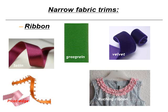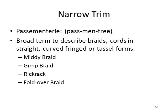Passimentary is a French word — a broad term that describes braids with either ribbon or cords. They can be in straight, curved, fringed, or tassel forms. The main types are a midi braid, a gimp braid, rick rack, and a fold over braid. You've likely seen all of these in ready-to-wear.